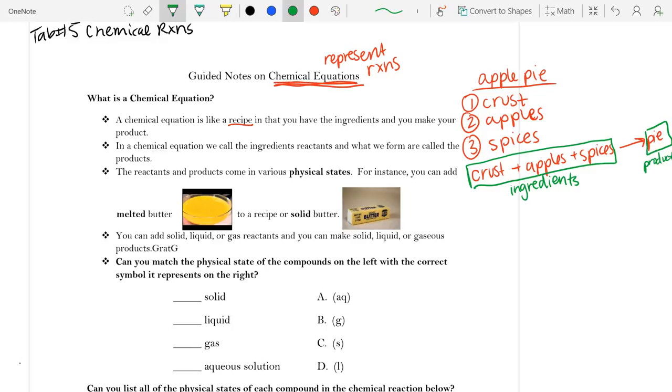And this arrow right here literally means to produce or to yield. So, anytime you kind of hear that phrase, you can think in your head, okay, arrow. Now, if we look back to our guided notes, it says, in a chemical equation, we call the ingredients reactants.